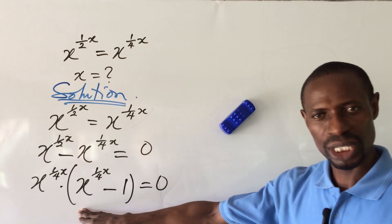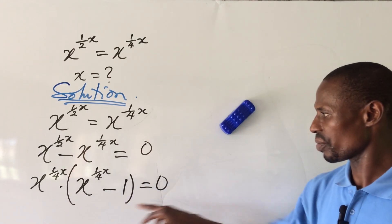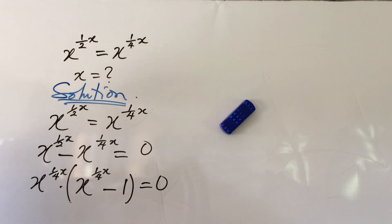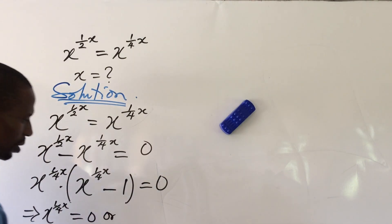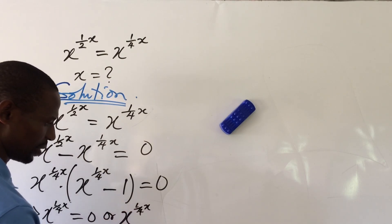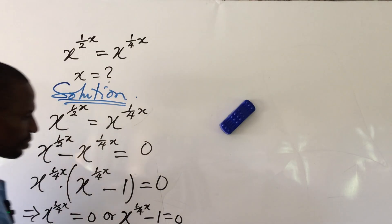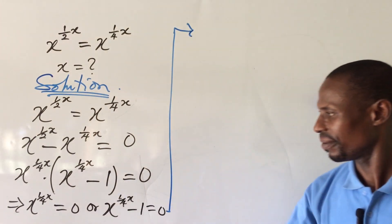We apply the zero product rule here. The zero product rule says we equate each factor to zero. So we have: x to the power of one all over four of x equal to zero, or x to the power of one all over four of x minus one equal to zero.